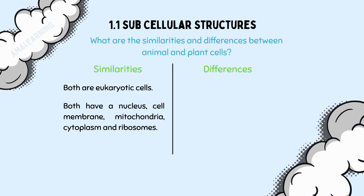A correct answer for differences would be: plant cells have cell walls, vacuoles, and chloroplasts.